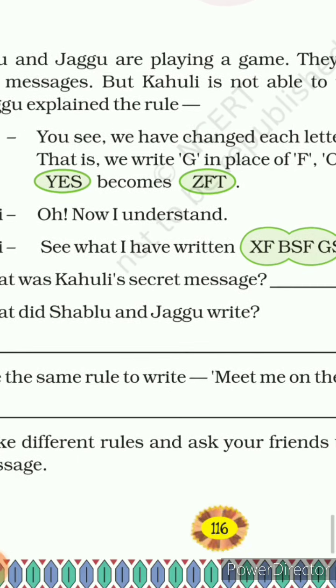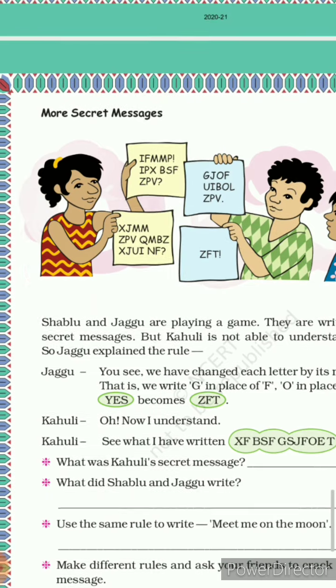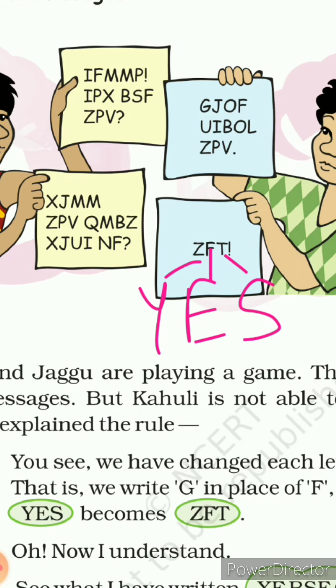Same message ko aap yahan par likhenge: Will you play with me. Aapka last message hai Z F T — Z se pehle Y, F se pehle E, and T se pehle S. So answer hai: Y E S.